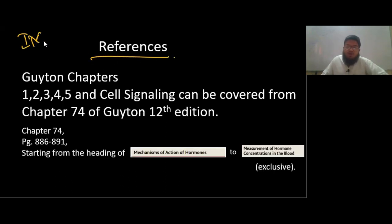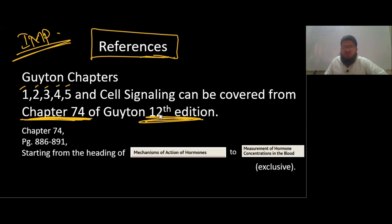Now, references. This is the most important part of this video. References. What chapters to read and from where to read. So Guyton chapters that you need to read are chapter 1, 2, 3, 4, 5. I'm not going into their names. And cell signaling, this usually isn't covered in these chapters. So what you do is you take out chapter 74 of 12th edition. I use 12th edition because this is the book I found online for this video, but you can use any edition. The editions don't really make a lot of difference because the stuff is somewhat the same, it's almost the same actually. And then chapter 74, pages 886 to 891, this needs to be covered. This has all the cell signaling stuff.